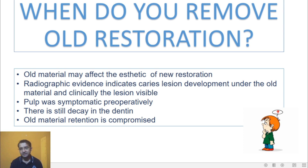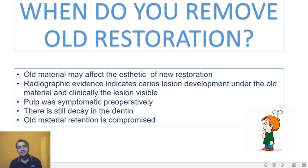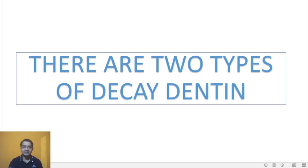If the pulp was symptomatic pre-operatively, that is very important, because it indicates there may be leakage or decay below the old restoration. To confirm whether there is any lesion beneath the old restoration, you really have to remove it. Once you remove it, if decay is still seen, you may need to explore that area further. If old material affects the retention of new material, you still have to replace the old restoration completely.